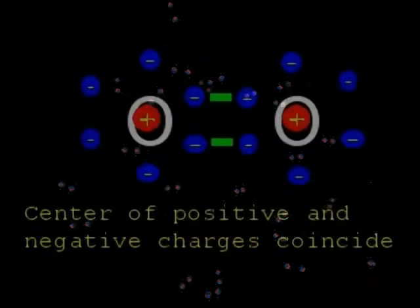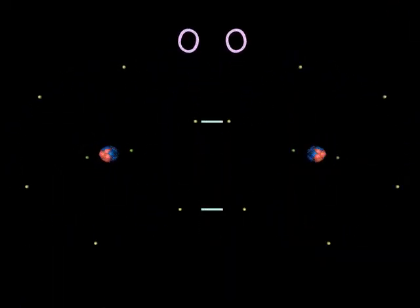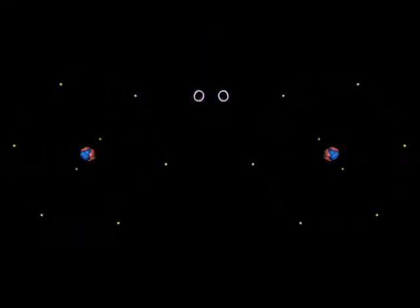When two atoms of the same element form a covalent bond, the electrons in the bond are shared equally by the two nuclei, and the center of positive charges coincides with the center of the negative charges, making the molecule nonpolar with no permanent dipole. Bonds of some molecules with several atoms may also form nonpolar molecules due to symmetry.